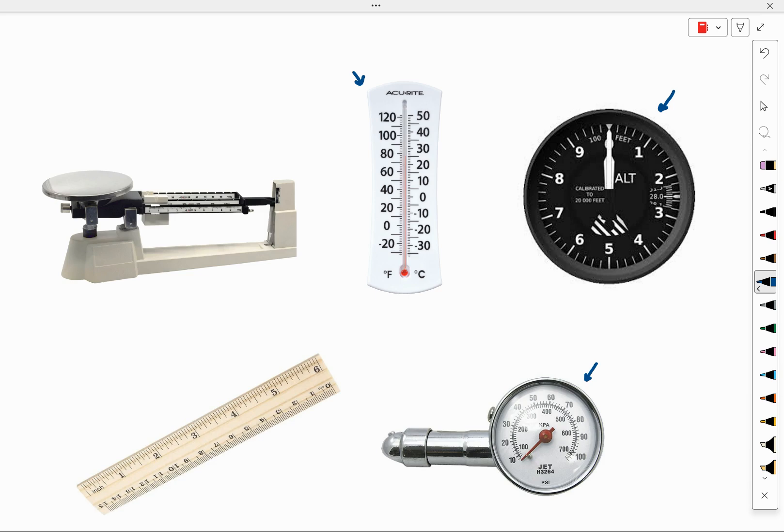And then the last object is a very familiar object to us. That's a ruler. It looks like it has inches on one side and centimeters on the other side, used to measure lengths or distances.